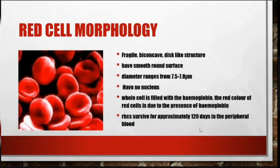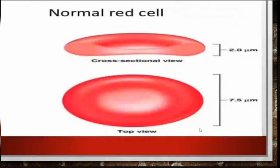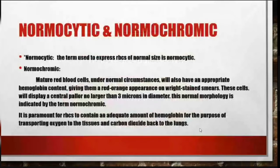RBCs survive for approximately 120 days in the peripheral blood. The normal red cell has a width of 2.0 micrometers and a diameter of 7.5 micrometers. The term used to express RBCs of normal size is normocytic.